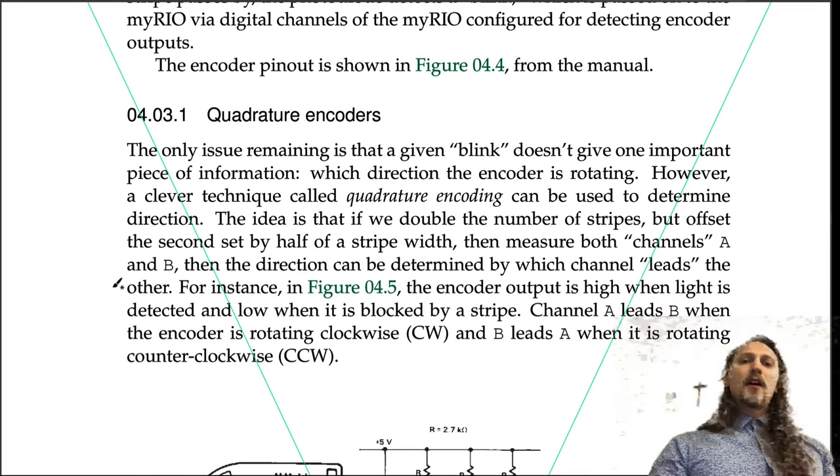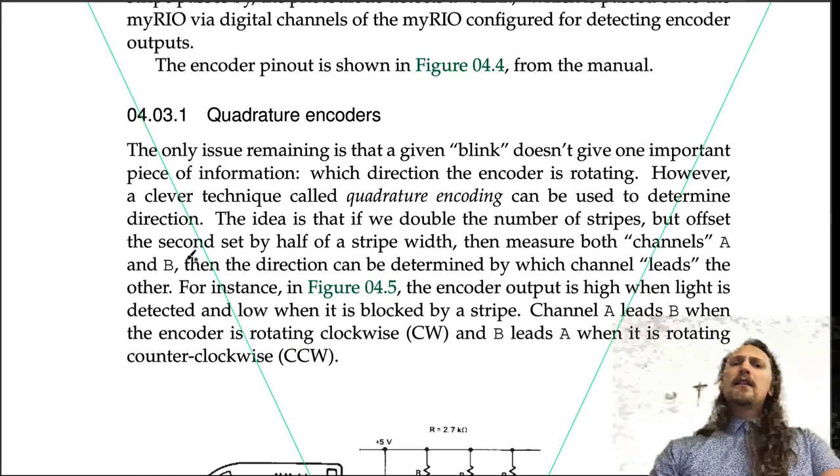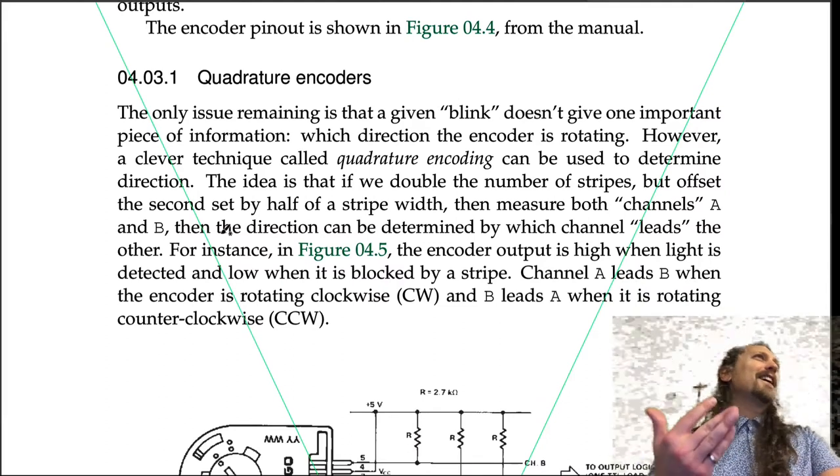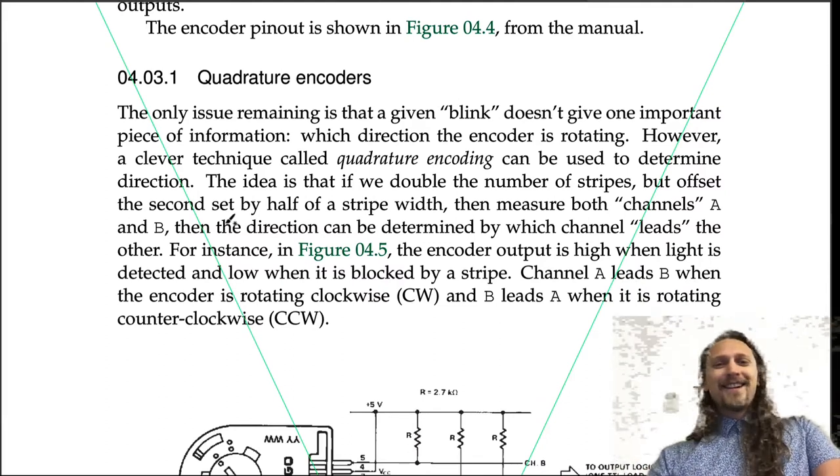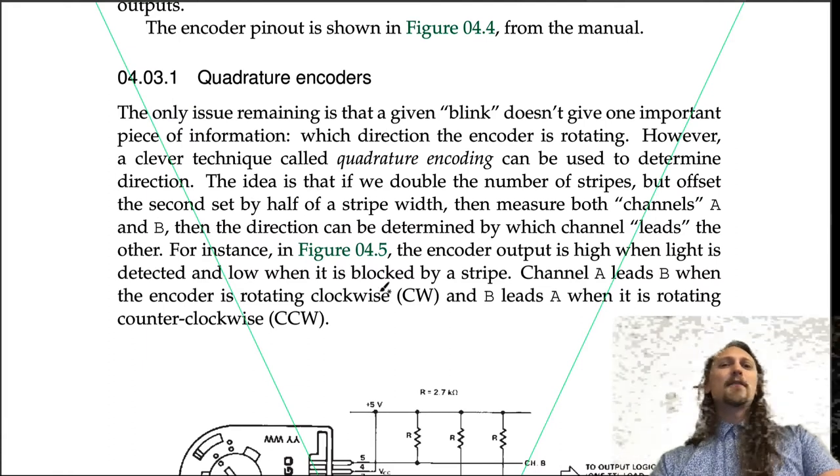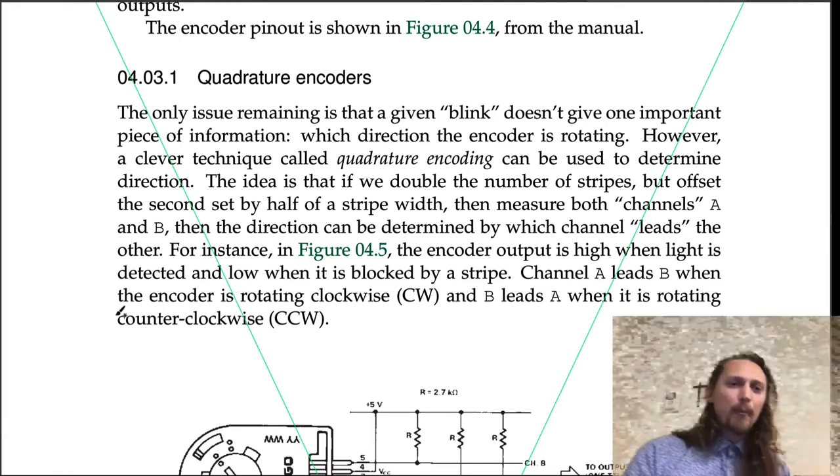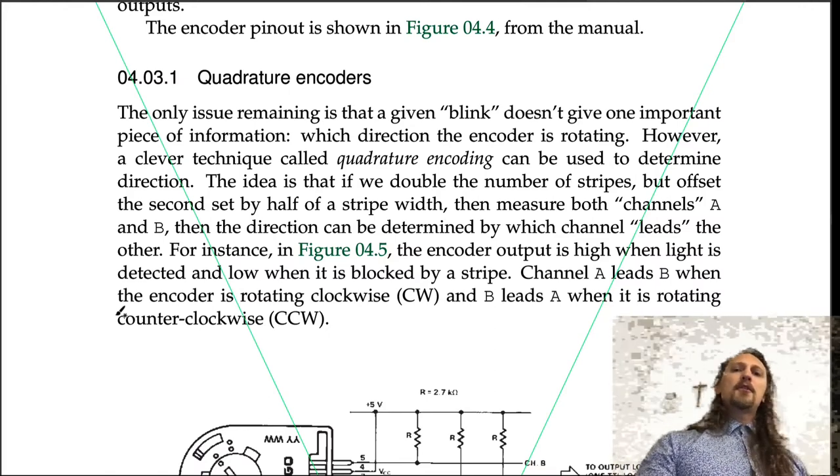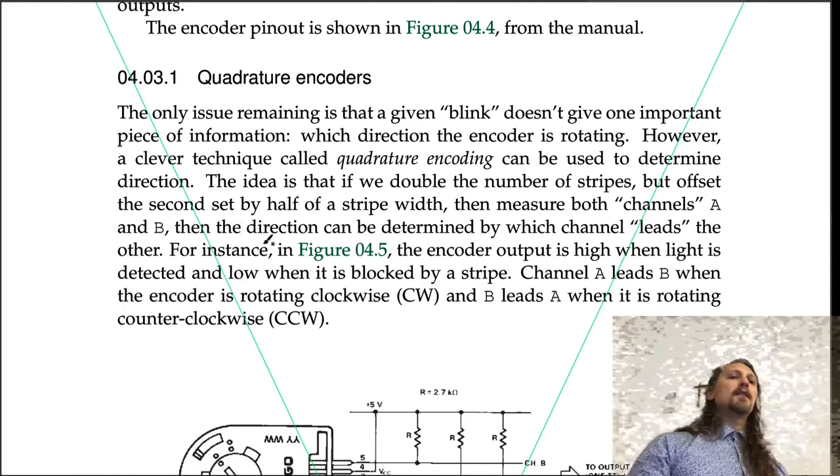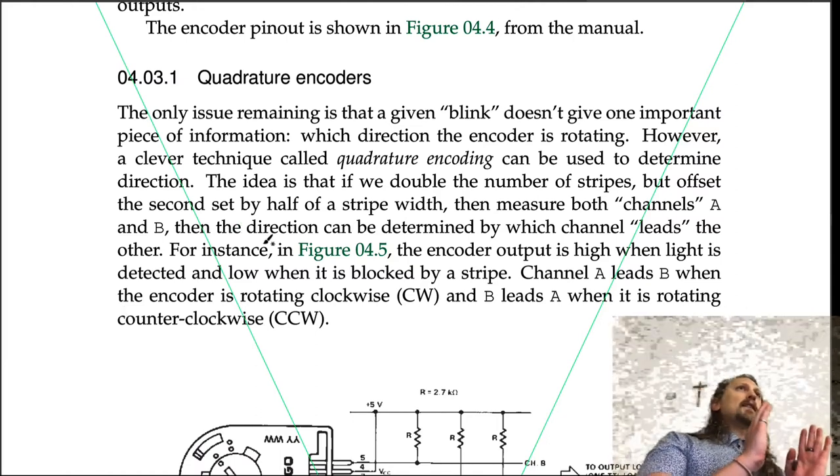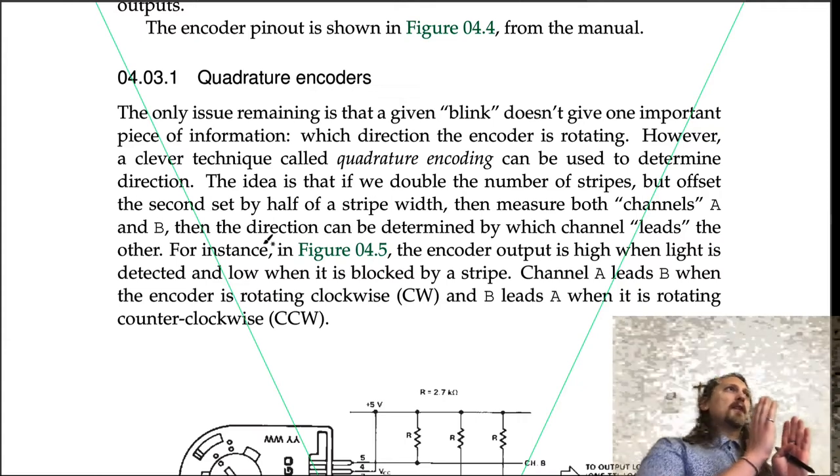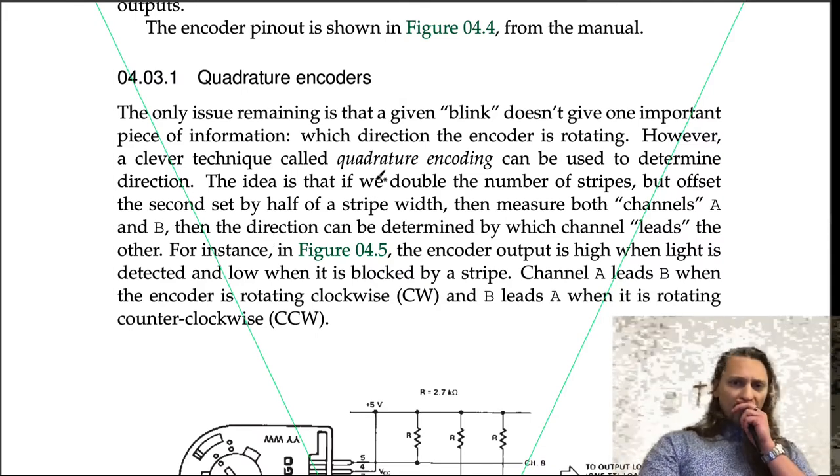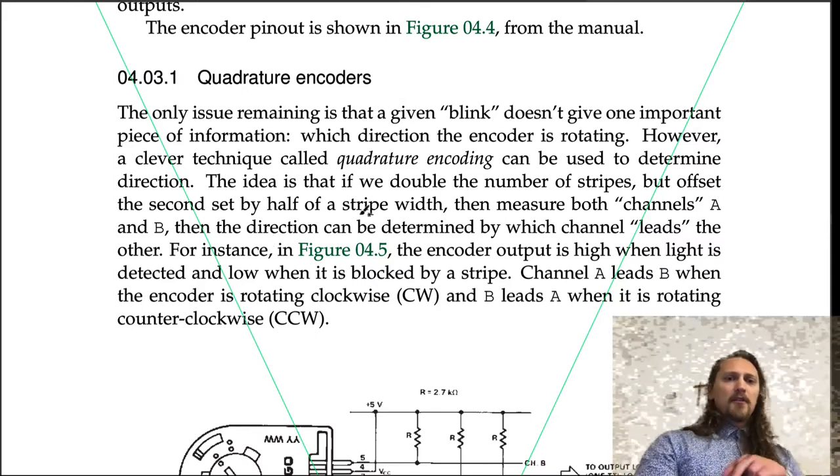The idea for determining the direction is a clever technique called quadrature encoding. The idea is that if we double the number of stripes but offset the second set by half of a stripe width, then measure both channels A and B, the direction can be determined by which channel leads the other.